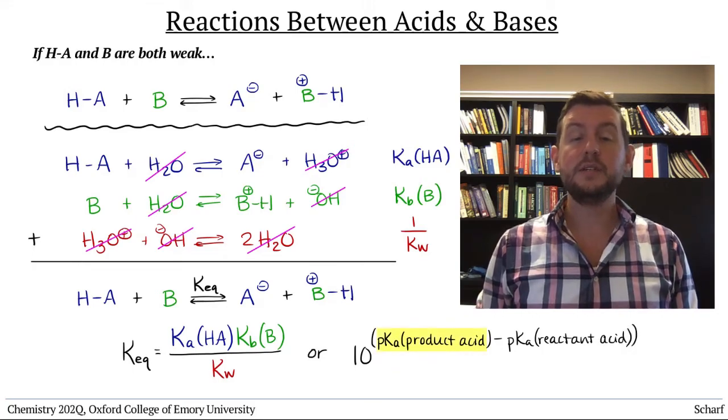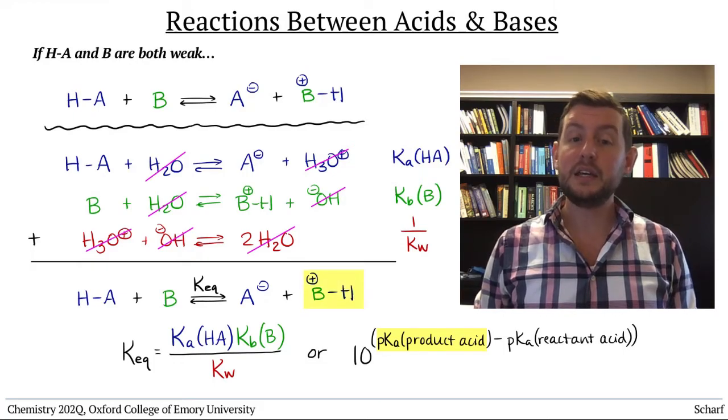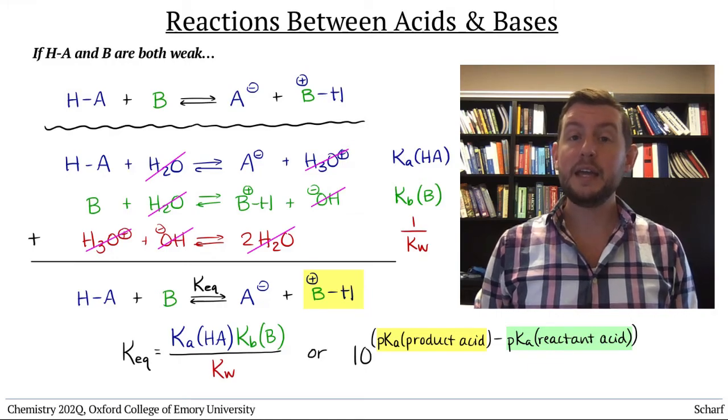This value is the pKa of the conjugate acid of B, and this is the pKa of the acid HA.